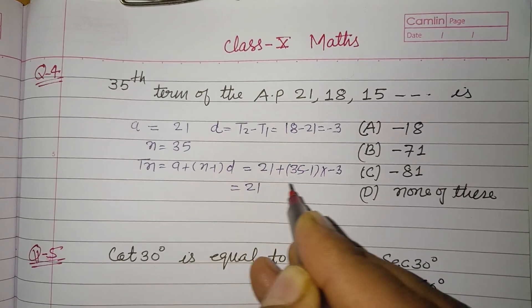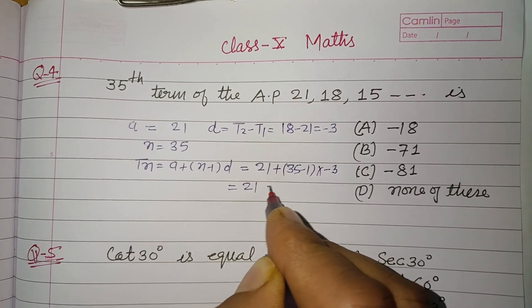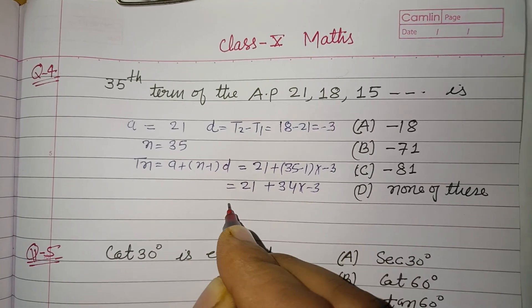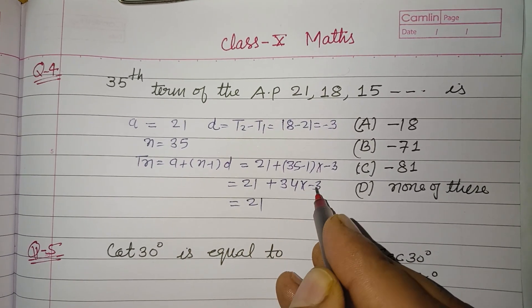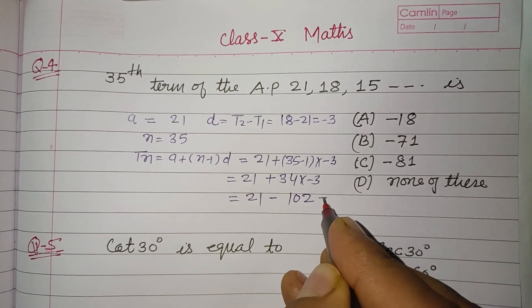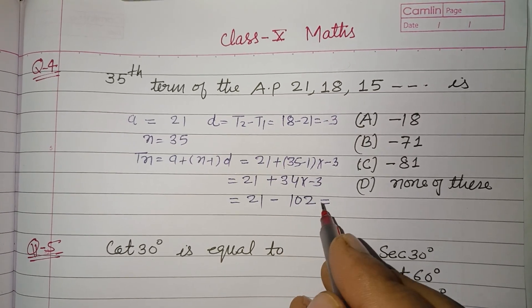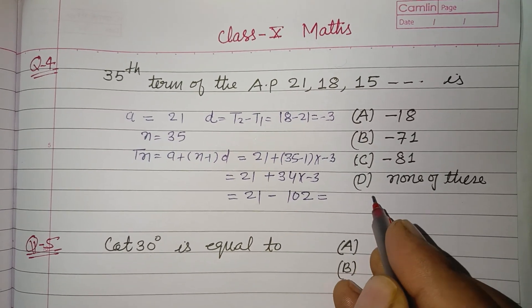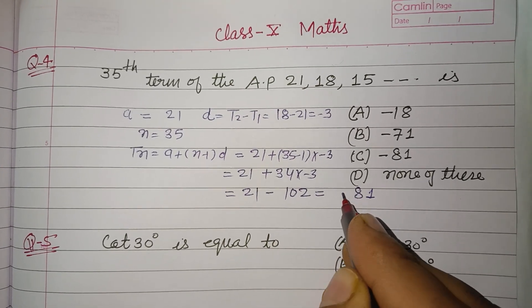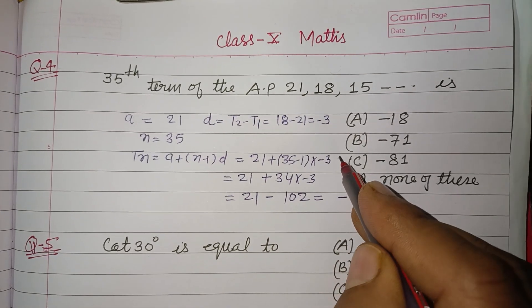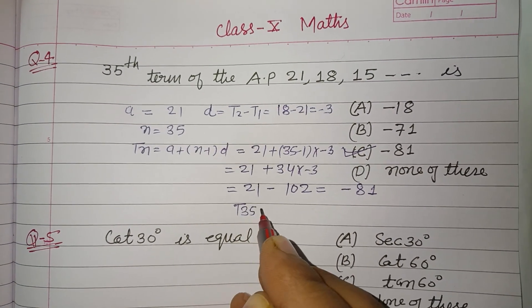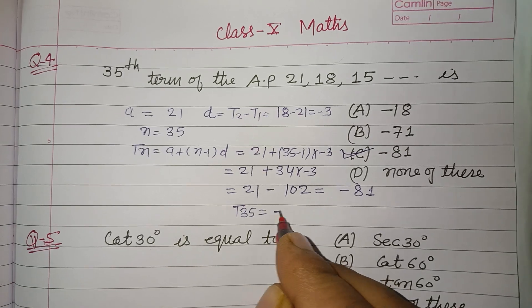So this is 21, 35 minus 1, that's 34 into minus 3. 3, 4 is 12, 3, 3 is 9, so this is 102. So 2 minus 1 this is 1, 10 minus 2 this is 8, so minus 81. So minus 81 is the correct answer. T35 is minus 81.